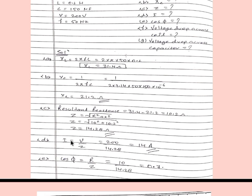Now for current: current is simply V divided by Z. V is given as 200 volt and Z is 14.28, so current is 14 ampere. For power factor, cos phi is the ratio of resistance to impedance. Resistance is 10 ohm and impedance is 14.28, so cos phi is equal to 0.7.